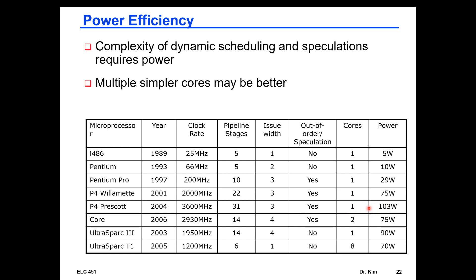Looking at real processor examples — the Pentium 4 with 31 pipeline stages is an example of a very deep 'super pipeline' and dissipated around 103 watts. If you've ever touched a 100-watt light bulb, you know how hot that is. Clock rates and pipeline depth are noted, with 31 stages for the Pentium 4 prescott.